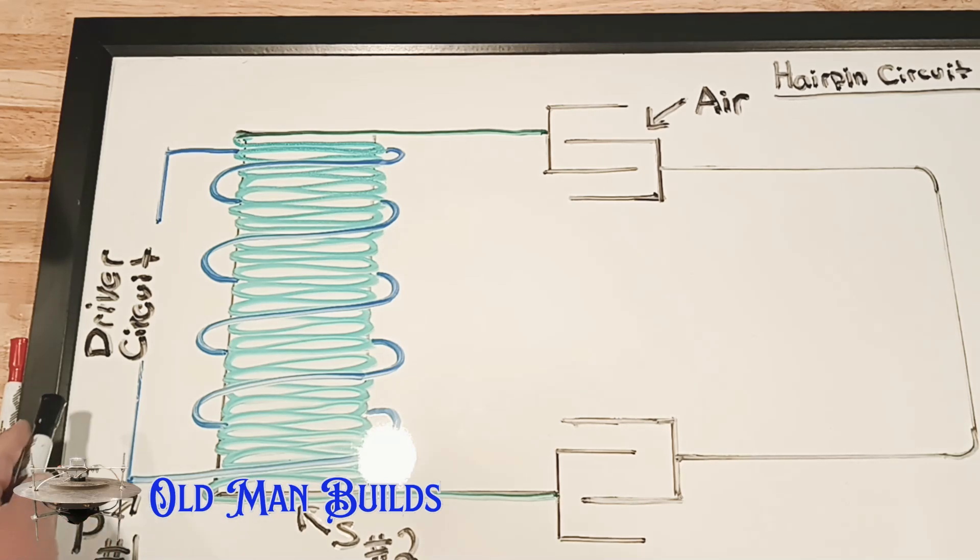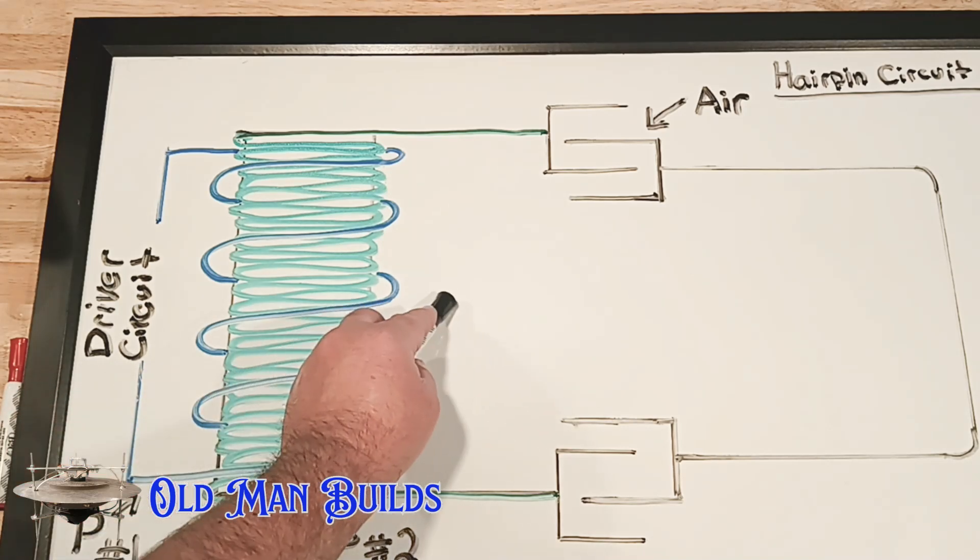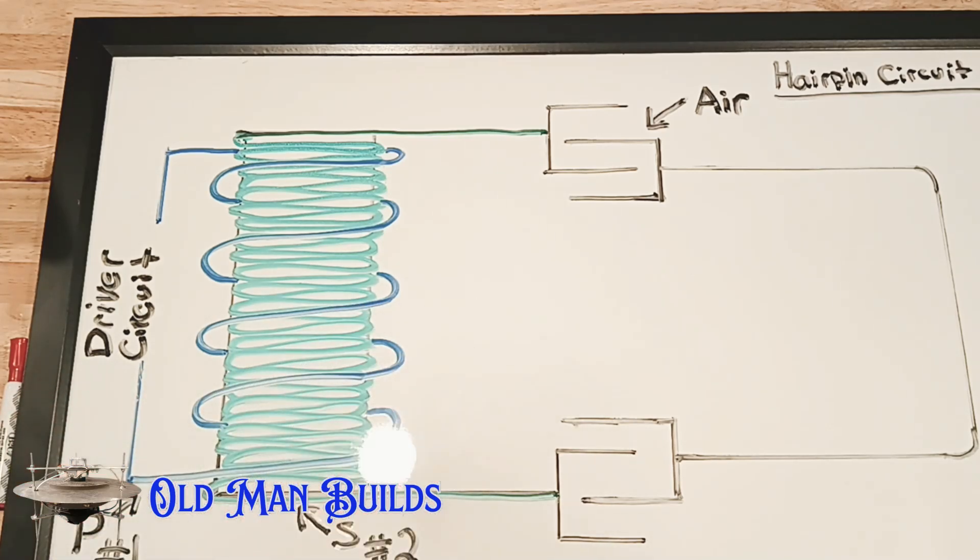We look over here, we're using a ZVS to drive this. We can use a Slayer exciter, and that's the reason we don't put the spark gap in here. Is there a spark if we did this? Yes there is. Is it ultimately important to what we're doing? No it's not.